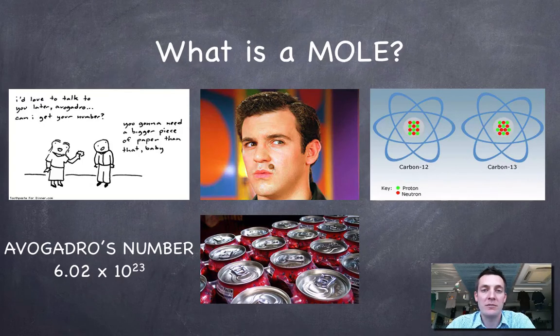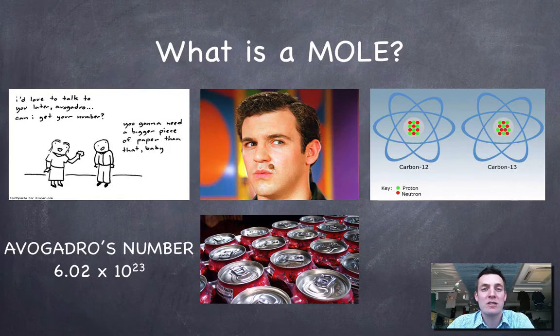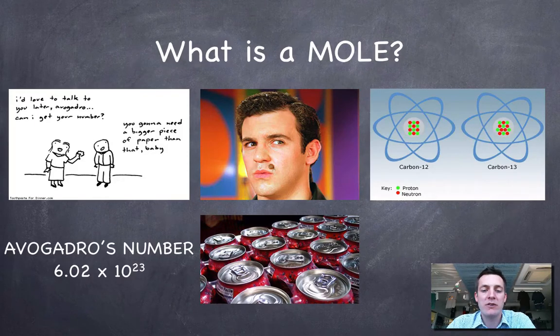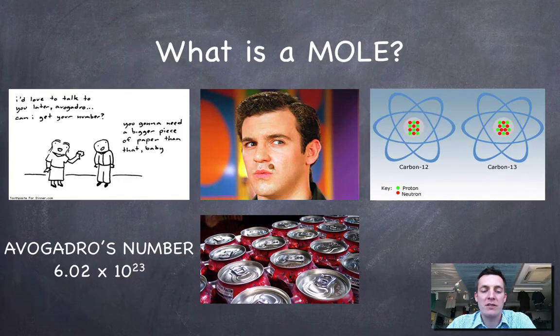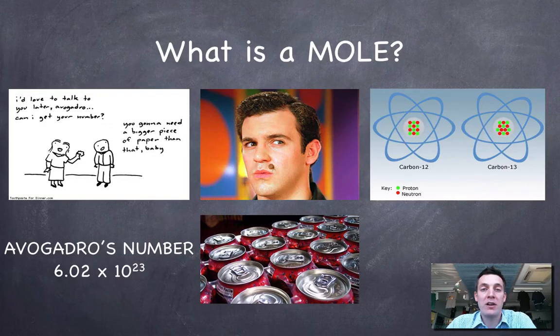So if we know that this number is 6.02 times 10 to the 23 and we want to have some idea of the scale of that number, let's think of something that we deal with on a regular basis. So if I take drink cans and I had a mole of them, so that is to say I've got 6.02 times 10 to the 23 of them. Remember, a mole is just a number, just like a dozen is a number, or a score is a number. So if I had a mole of drink cans, I'd have this many of them, 6.02 times 10 to the 23, and if I decided to stand them side by side, I'd find that I could cover the entire surface of the earth in these cans, not just land, but water as well.